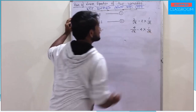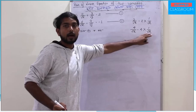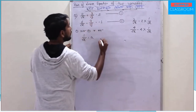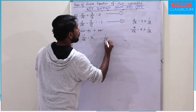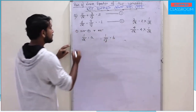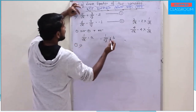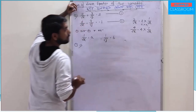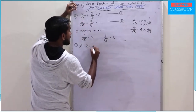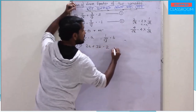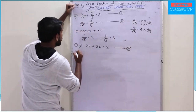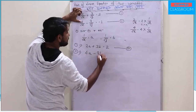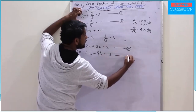Let 1 by root x equal to a and 1 by root y equal to b. Then 2 by root x gives 2a, so we get 2a plus 3b equal to 2, and 4a minus 9b equal to 1.